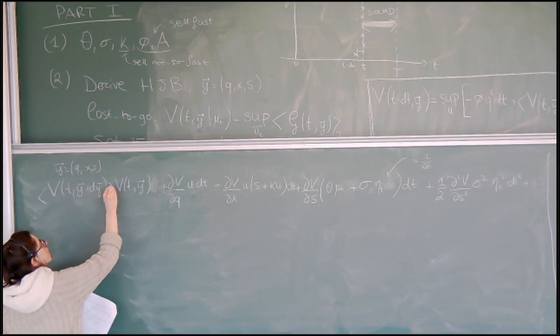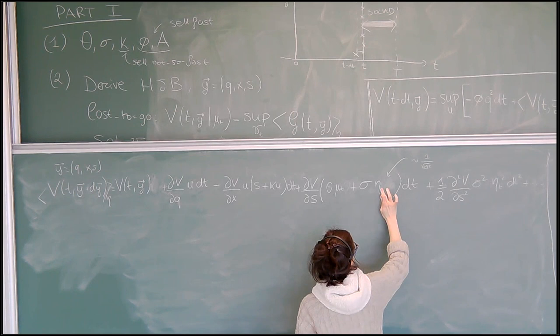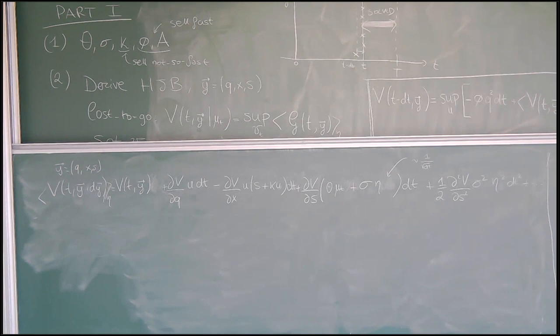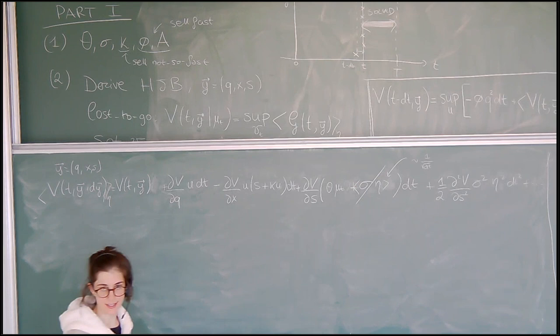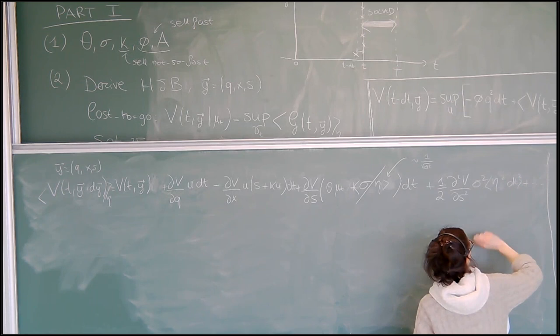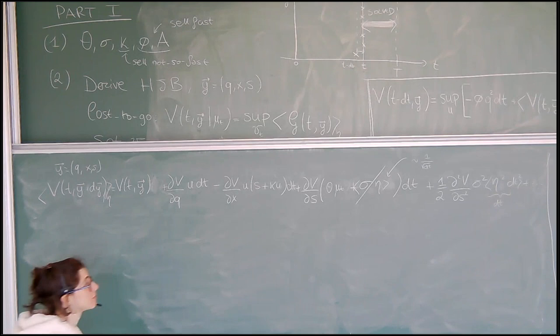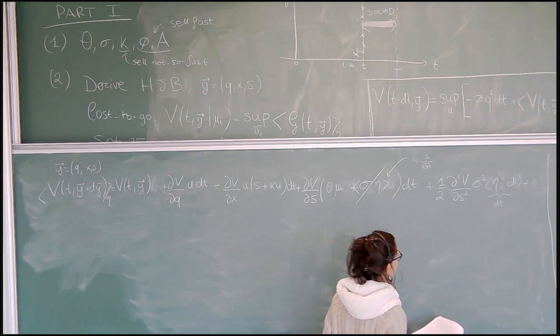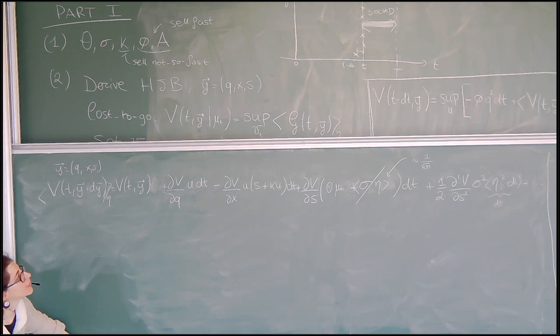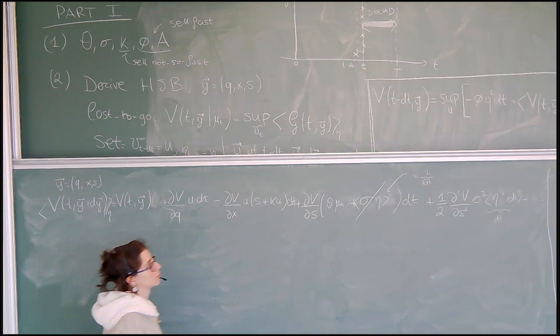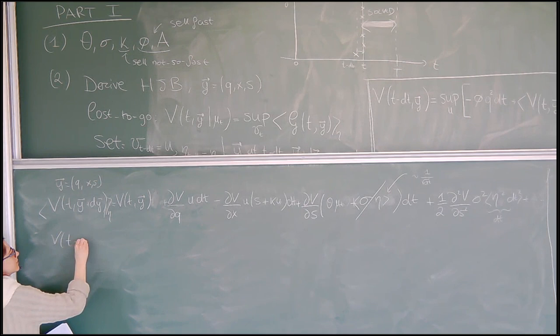The noise in the little time interval averages to zero for the linear term — the noise has zero average — whereas the average of eta squared is precisely equal to dt. So it gives the contribution to linear order in dt, exactly as in the lecture. What I do is go back to the expression and substitute into the right-hand side what I just derived. So I have V(t minus dt, Y) minus V(t, Y) on the left, divided by dt. On the right hand side I have the supremum over U.